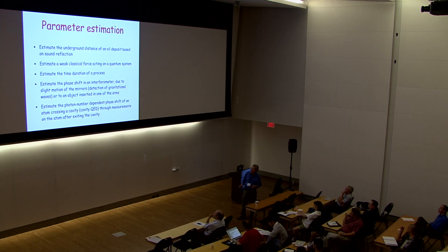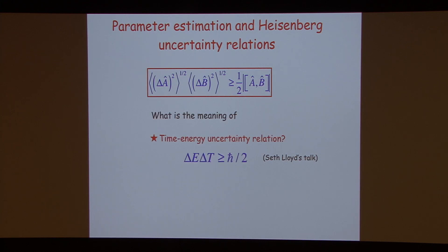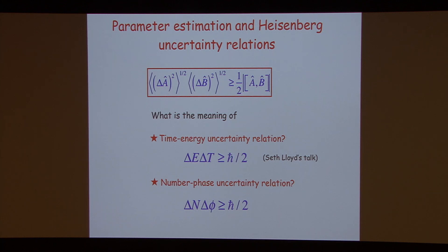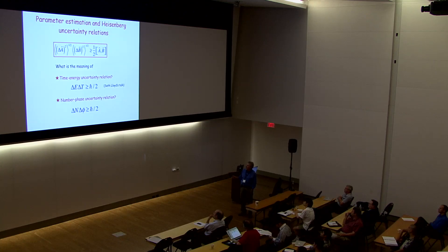These are some problems which we might be interested in. Now, parameter estimation is also interesting for some conceptual reasons. You have Heisenberg uncertainty relations, and you might ask: what is the meaning of the time-energy uncertainty relation, which was in Seth Lloyd's talk yesterday? What's the meaning of the number-phase uncertainty relation? This time-energy uncertainty relation has been misunderstood for a long time, and also the number-phase uncertainty relation, I think. People have tried to understand it by defining phase operators, but phase operators are tough things to define — there is no unambiguous definition. What I'm going to show you is that quantum metrology is the proper framework to understand these relations.